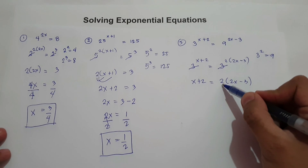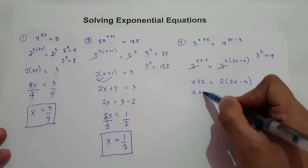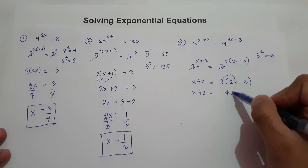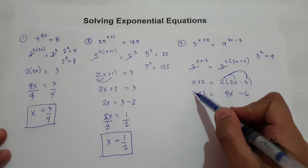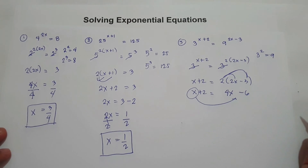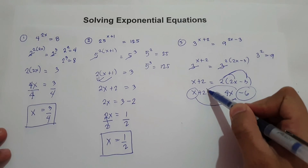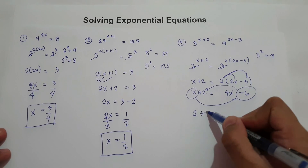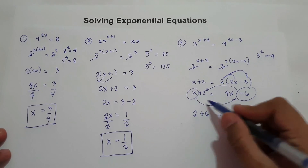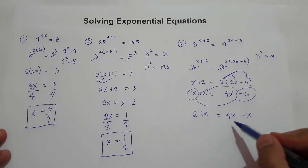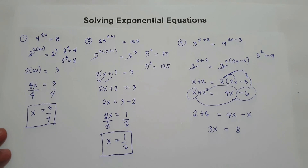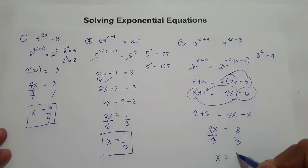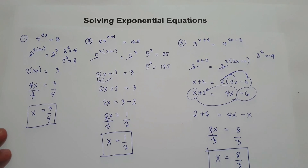Multiply 2 on 2x minus 3: we have x plus 2 equals 4x minus 6. Move x to the side of 4x minus 6, and negative 6 to the side of x plus 2. From negative, it became positive 6. So 4x minus x is 3x, and 2 plus 6 is 8. Divide both sides by 3. The value of x is 8 over 3.